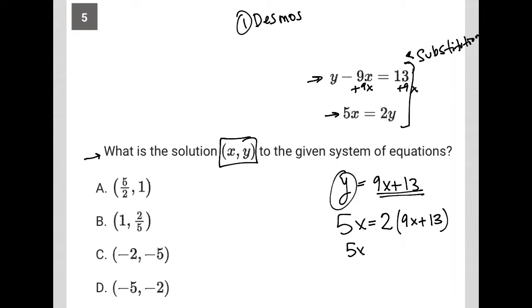So I'm left with 5x equals 18x, right? I'm distributing the 2 across here, plus 26. I can subtract 18x from both sides of the equation. And I'm left with negative 13x equals 26 and divide both sides by negative 13 and get x is equal to negative 2.